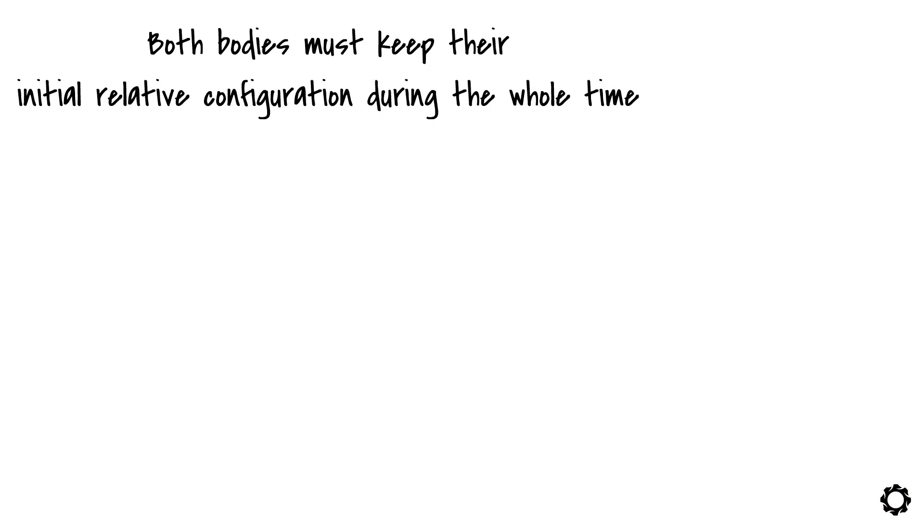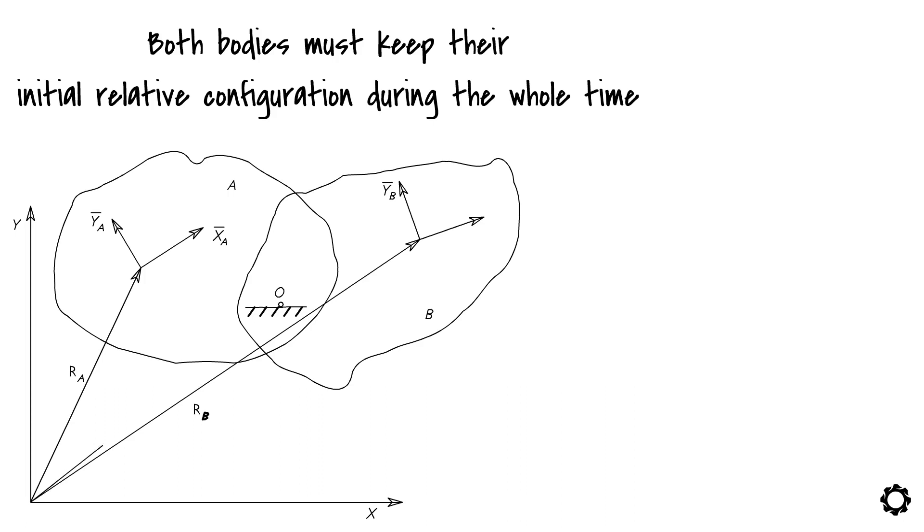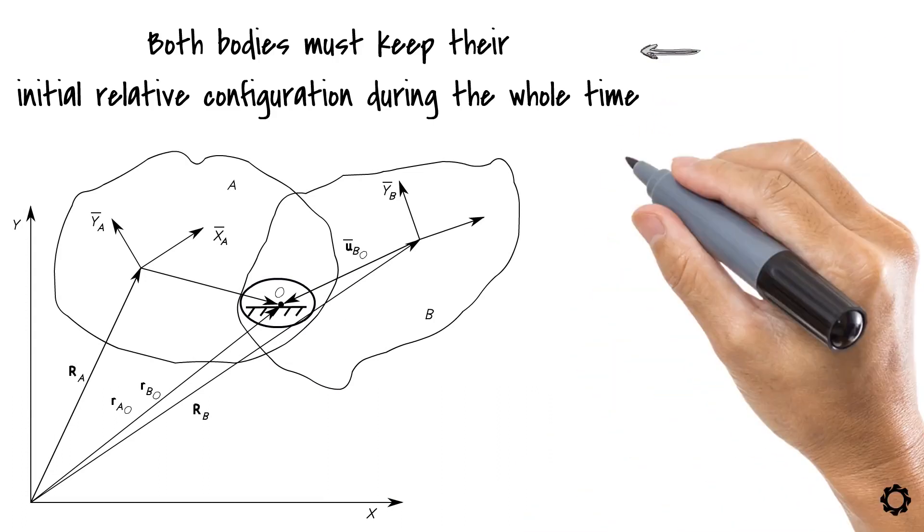To write this mechanism in mathematical form, let's bring an inertial system with two bodies joined by a fixed constraint. Let's use point O, which is the point where our fixed joint is located, to express these conditions mathematically.